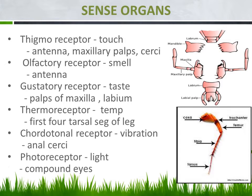The first sense organ is the thigmoreceptor, which is responsible for receiving the touch sense. It is located in the antenna — a pair of antennae located in the head region. The next location is the maxillary palps. The maxilla, shown as a mouth part of the cockroach, is also responsible for receiving the touch sense. Additionally, the anal cerci — present in both male and female — are also responsible for receiving the touch sense.